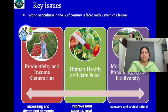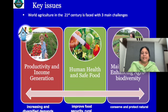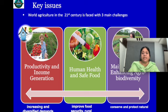The key issues we are facing now, especially in agriculture, are productivity and income generation. The demand for food is increasing, and even productivity is also increasing. But whether the increased productivity is actually increasing the income of a farmer — that is the main concern. Whether the farmer is getting his share of income.